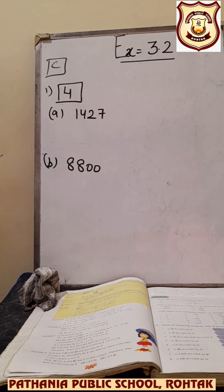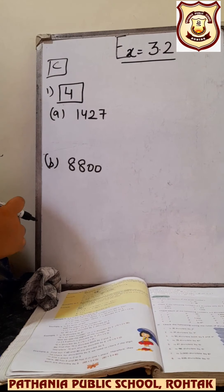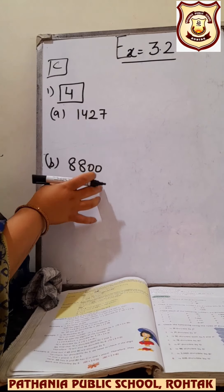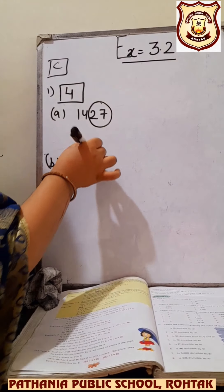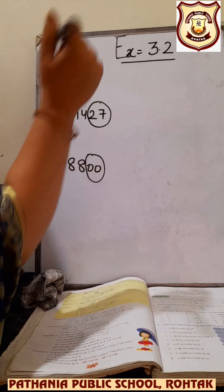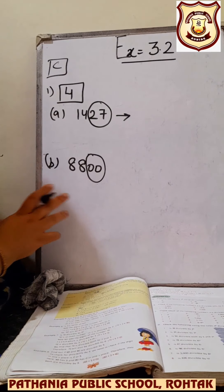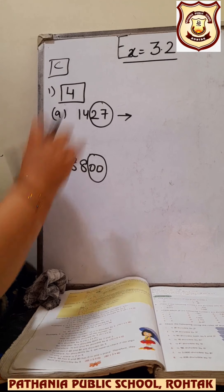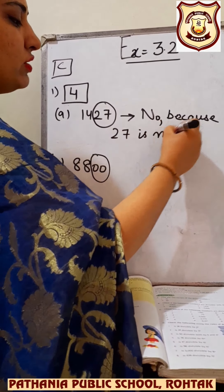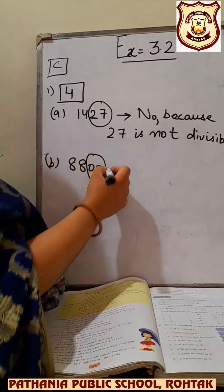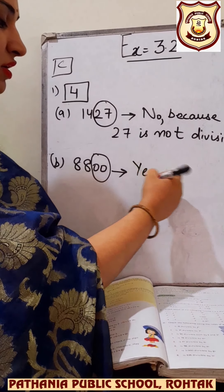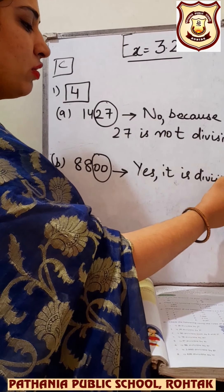Question number C: you have to check the divisibility by 4. The divisibility rule for 4 is to check the last 2 digits. If the last 2 digits are divisible by 4, then the complete number is divisible by 4. Here the last 2 digits are 27. Is 27 divisible by 4? No — 27 is not divisible by 4, so the answer is no. If a number ends with two zeros, then you can say yes, it is divisible by 4.